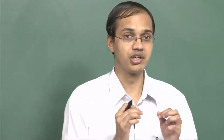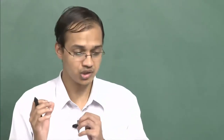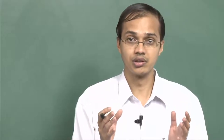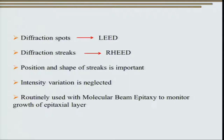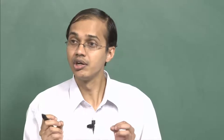Similar to low energy electron diffraction, where we used the position and spacing of spots to decipher the structure, we can use the position and distribution of streaks to find out the crystal structure of the entity under consideration. The theory for reflection high energy electron diffraction is not very well developed, and on a routine basis we do not account for the intensity variation that occurs in the streaks obtained.